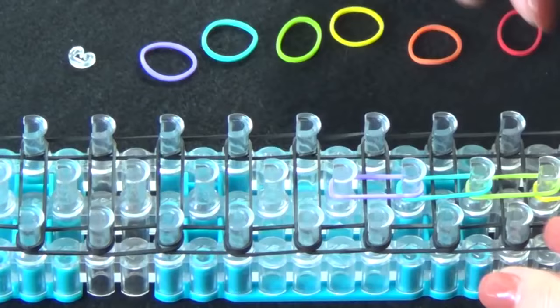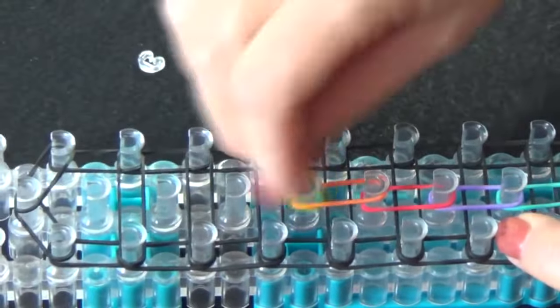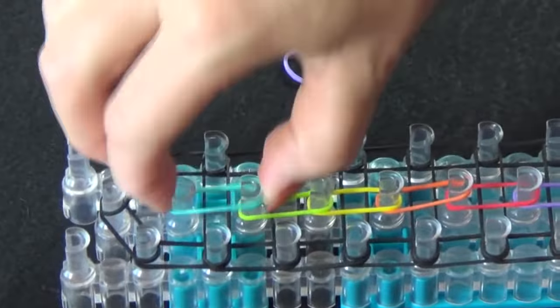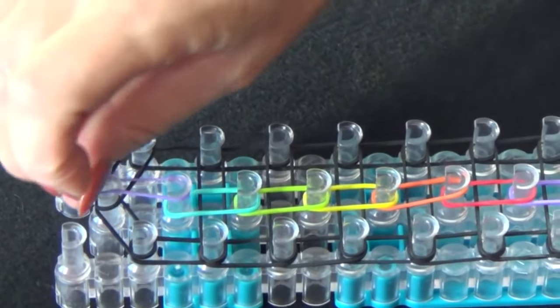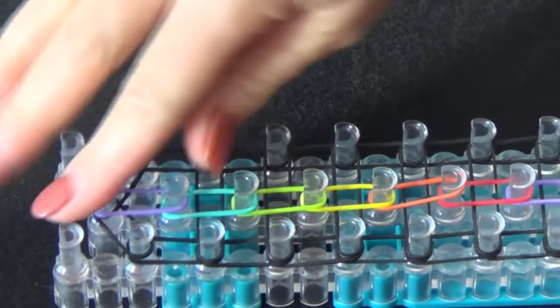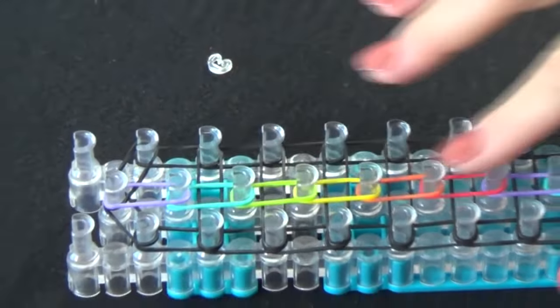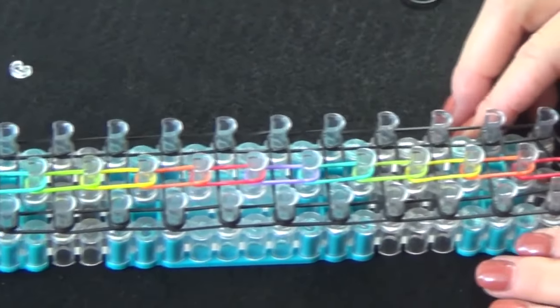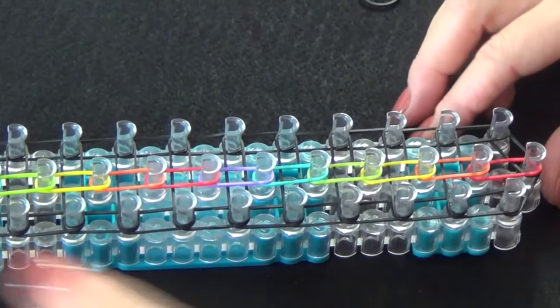purple, and we'll continue that to the end of the loom. Once we've completed laying this center row of rubber bands, we'll turn the loom around.